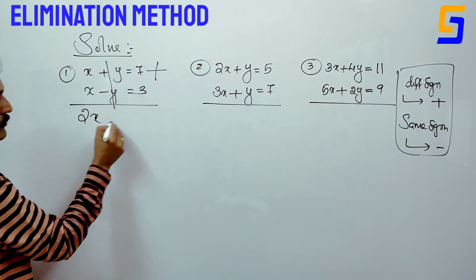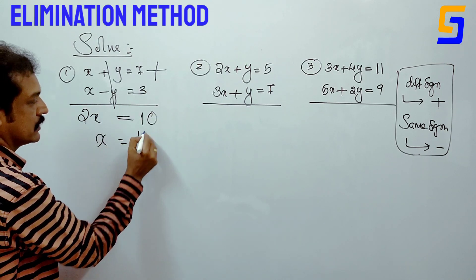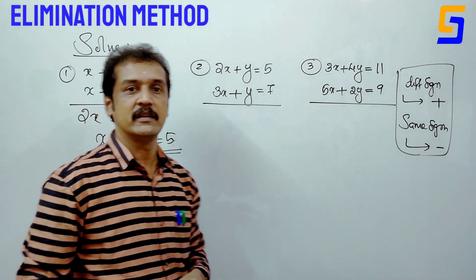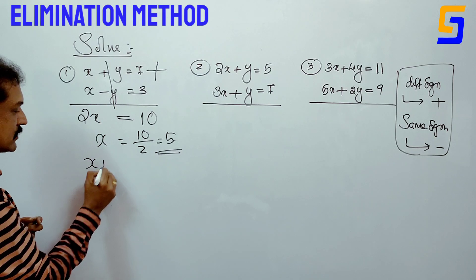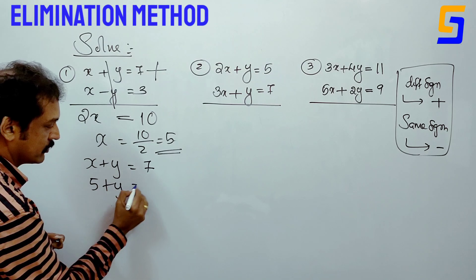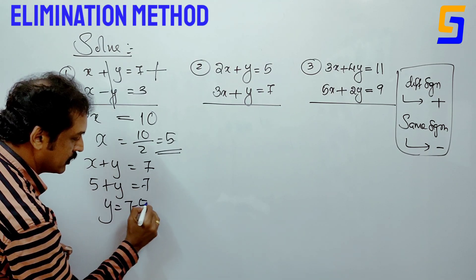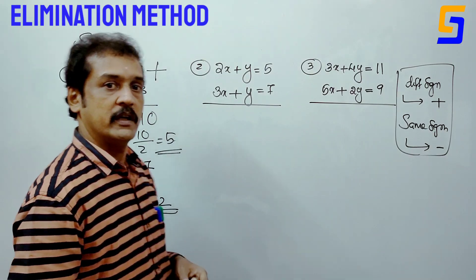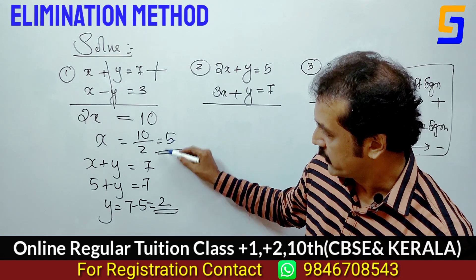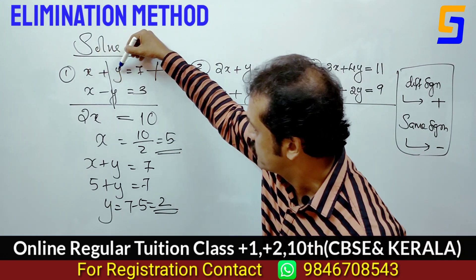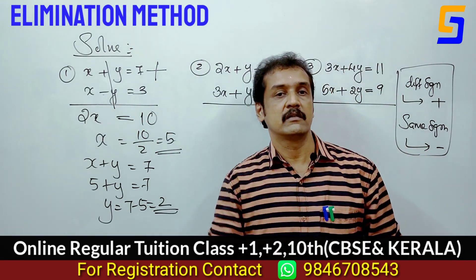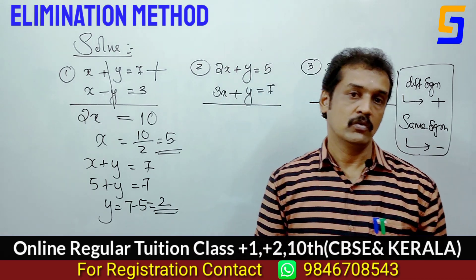X plus x gives 2x. x equals 7 plus 3 is 10, then x equals 10 by 2, answer is 5. Then substituting back: x plus y equals 7, x equals 5, so 5 plus y equals 7, then y equals 7 minus 5 equals 2. So x equals 5 and y equals 2.